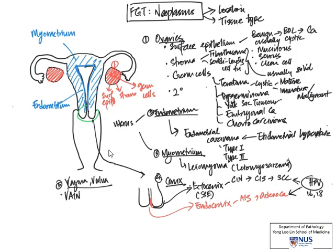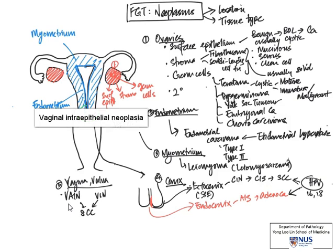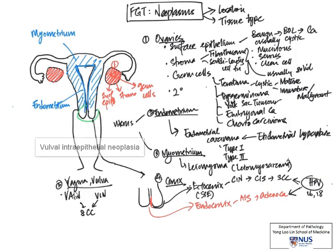Moving downwards, looking at the vagina and the vulva, we can also have — very similar to the uterine ectocervix — VAIN or VIN. VAIN stands for vaginal intraepithelial neoplasia and VIN is vulval intraepithelial neoplasia. They are both premalignant conditions, also associated with HPV infection, and can similarly progress to invasive squamous cell carcinoma.